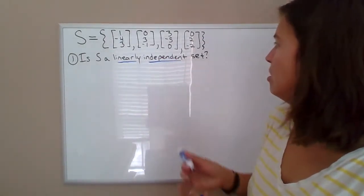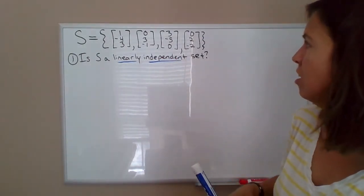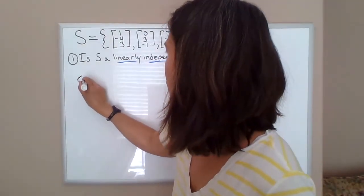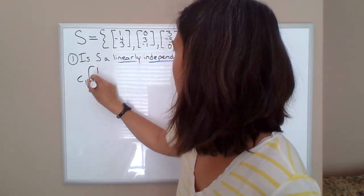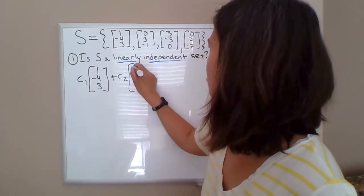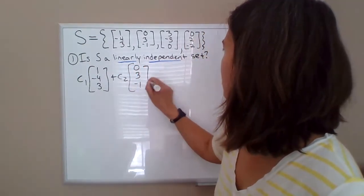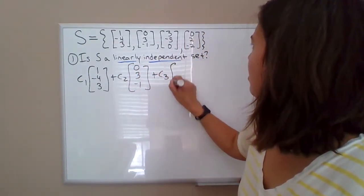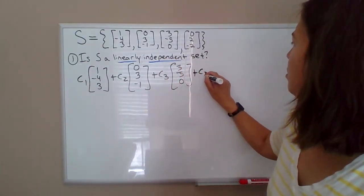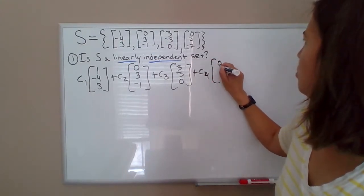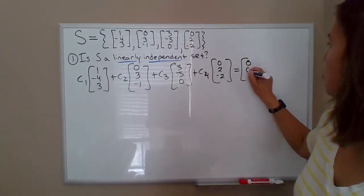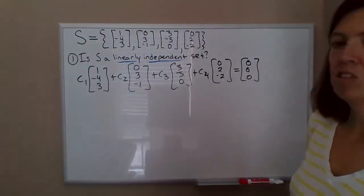Just going back to the definition of linear independence. Those vectors are linearly independent if the equation C1 times the first vector plus C2 times the second vector, and then you get the idea, C3 times the third one, C4 times the fourth one, equals the zero vector for this vector space, which would just be zero, zero, zero. That's the zero vector in R3.